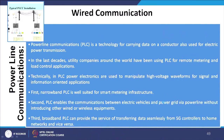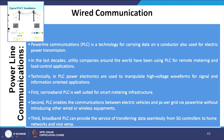Along with fiber optics, power line communication (PLC) is used — a very old technology. PLC is a technology for carrying data on a conductor also used for electric power transmission. In the last decade, utility companies around the world have been using PLC for remote metering and load control applications. In PLC, power electronics are used to manipulate high-voltage waveforms for signal and information-oriented applications. Narrowband PLC is well suited for smart metering infrastructure.